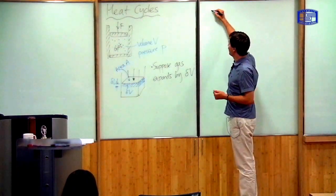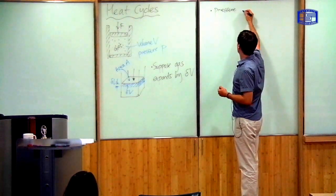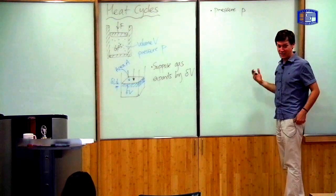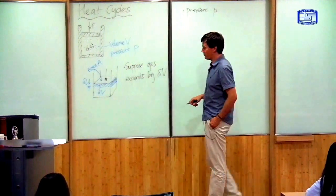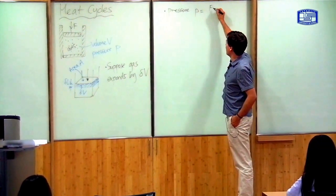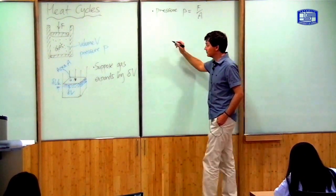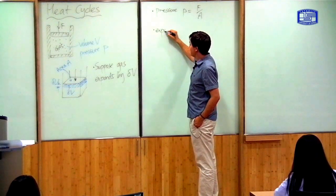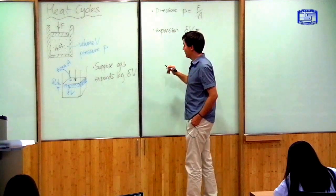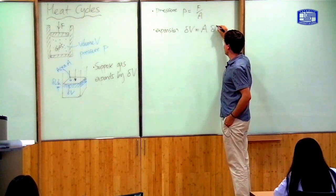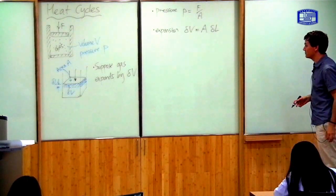We can say some things in this case. First, pressure is defined as force per unit area, so if the force is F and the area of the top of the box is A, then the pressure is simply F divided by A. And the expansion in volume delta V is equal to the area times the amount by which the piston is moved. Those are simple equations.